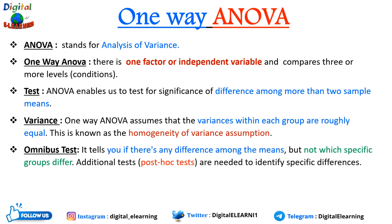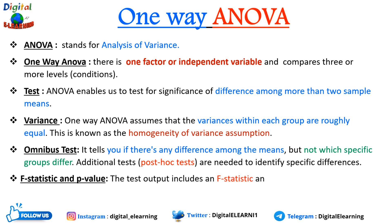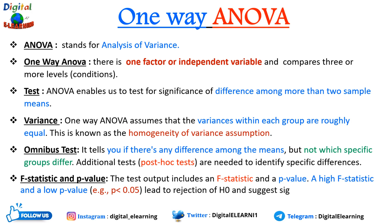The test output includes an F-statistic value and the p-value. A higher F-statistic and lower p-value — when p is less than or equal to 0.05 — leads to rejection of H0 and suggests a significant difference among the groups.